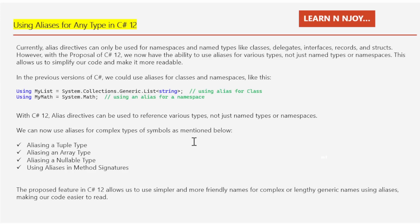Currently, alias directives can only be used for namespaces and named types like classes, delegates, interfaces, records, and structs. However, with C# 12, we now have the ability to use aliases for various types, not just named types or namespaces. This allows us to simplify our code and make it more readable.